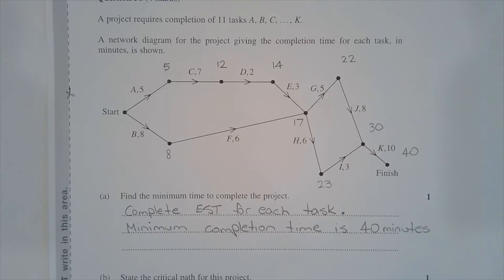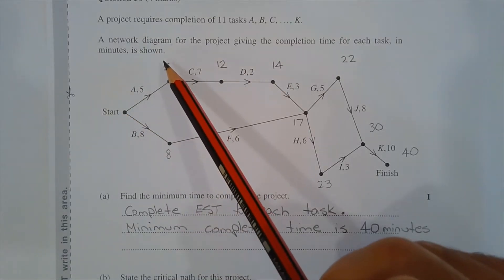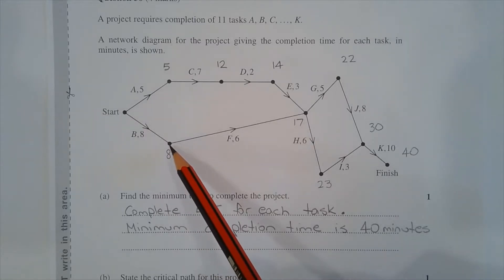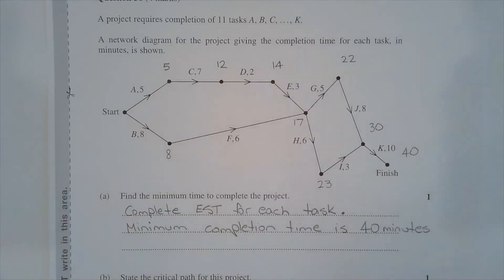The minimum time to complete the project is found by completing the earliest start time or EST for each task. Starting here, after task A we're at the 5 minute mark, after task B we're at the 8 minute mark. 5 plus 7 is 12, 12 plus 2 is 14.